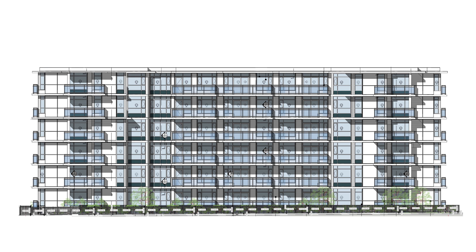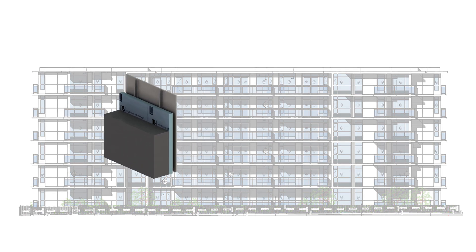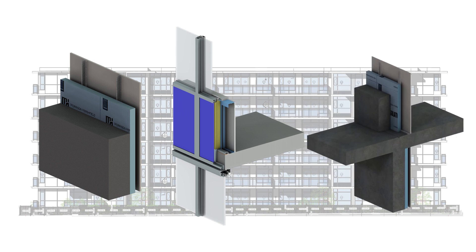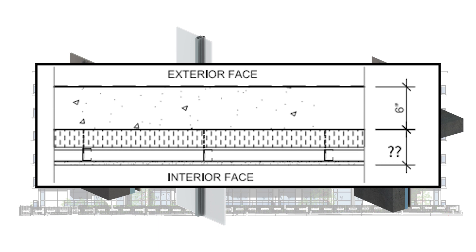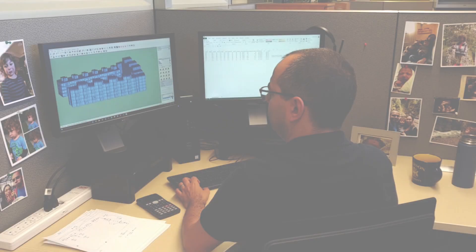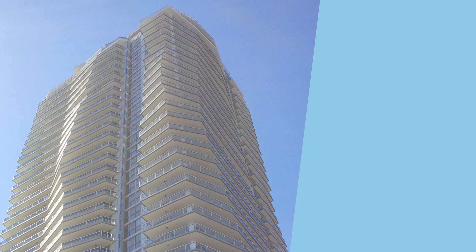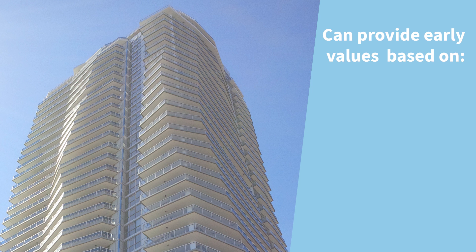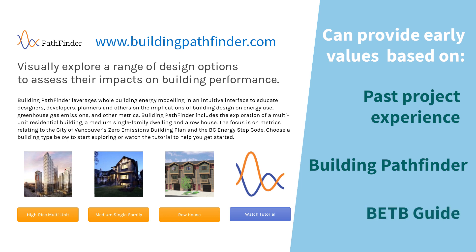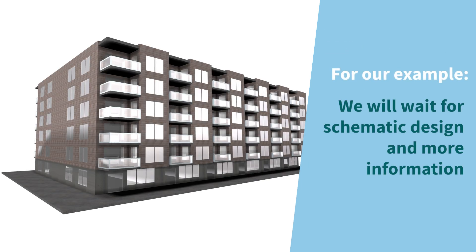At the conceptual design stage, there are no detailed drawings and the envelope design is still fluid. But the project team is thinking of using mainly architectural concrete, window wall, and concrete balconies. However, the project team has questions about the feasibility of this approach and how thick the walls might need to be to meet the project requirements. The energy model is not yet started and hard targets for the envelope U values have not been established. However, expectations for the building envelope U values can be provided based on past experience or other resources such as Building Pathfinder or sections of the BETB guide. In this case, we've decided to wait for more information before making our first U value calculation.